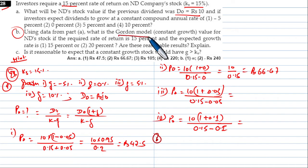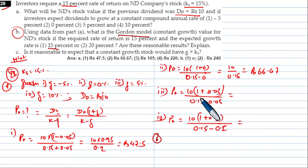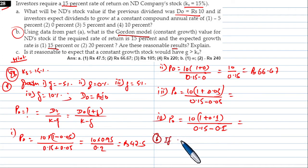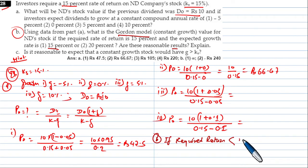Under the Gordon model, the dividend discount model — with a constant mean growth of 15% — the idea is that when required rate of return is less than the growth rate, the model breaks down. This is a very common limitation zone. If the required rate of return is less than the growth rate, you cannot use the Gordon model.